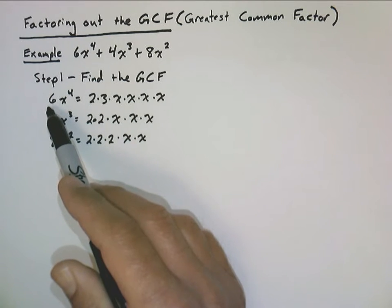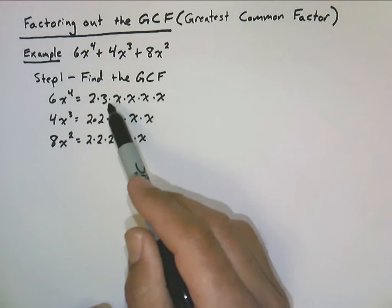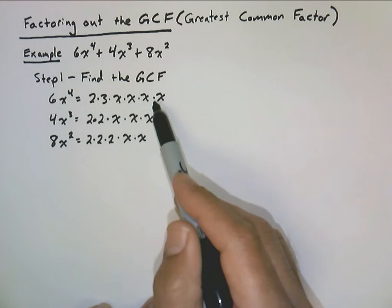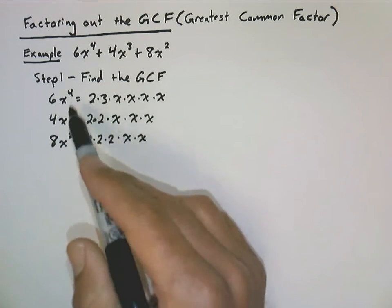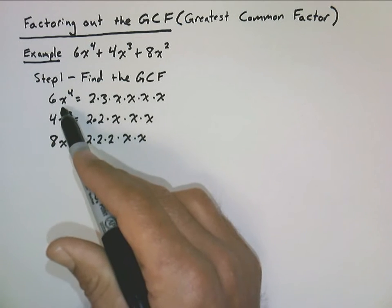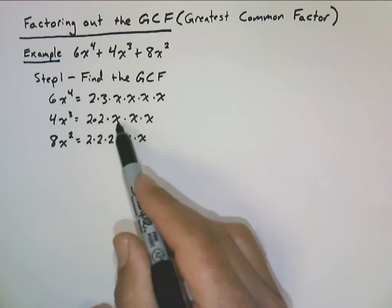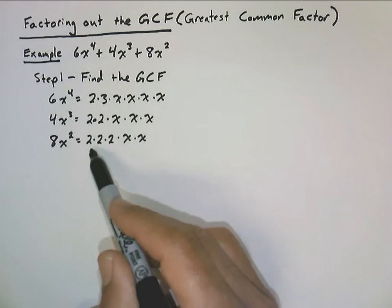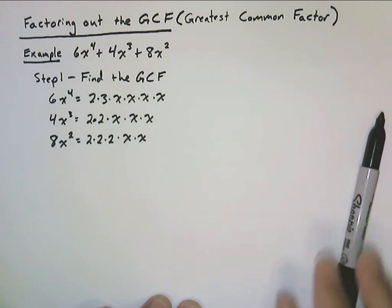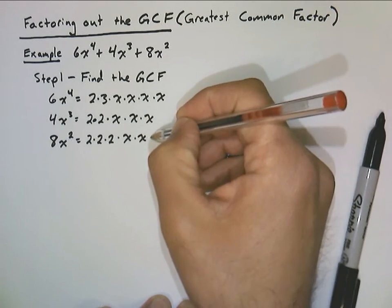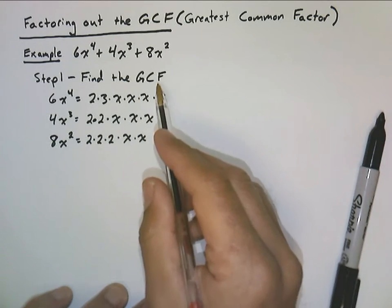So 6, as prime numbers, is 2 times 3. x to the fourth is x times x times x times x — a product of four linear expressions. And so this would be the prime factorization of x to the fourth. 4x cubed we could rewrite as 2 times 2 times x times x times x. And 8x squared is 2 times 2 times 2 times x times x.